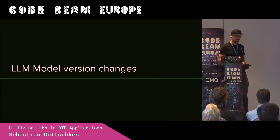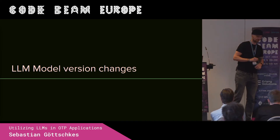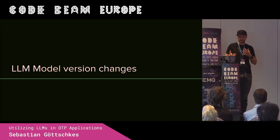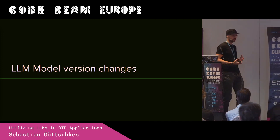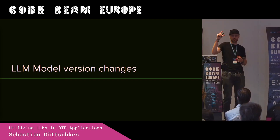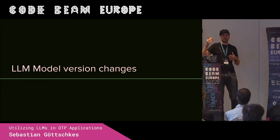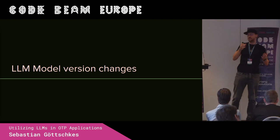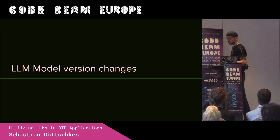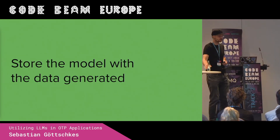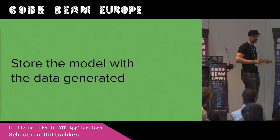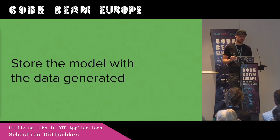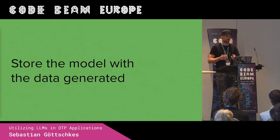When it comes to model version changes there is no real best practice, because every version behaves differently and you need to test it. With PromptFoo it's easy: you can add two providers, repeat each test five times, and get ten results back — five from the old model and five from the new — then do quality assurance to see if the results still match your expectations. One tip: store the model name with the data it generated, so you can do quality assurance after the fact and see which model was used — especially useful if you're doing feature flagging where one customer sees the old model and another sees the new.